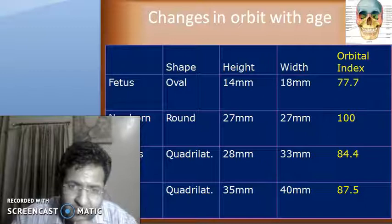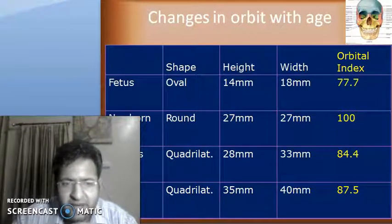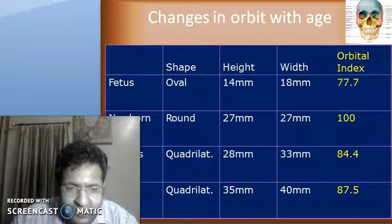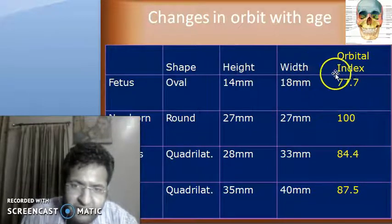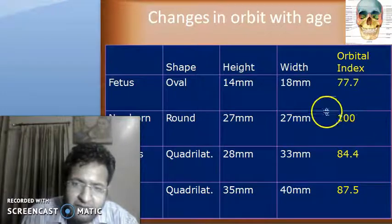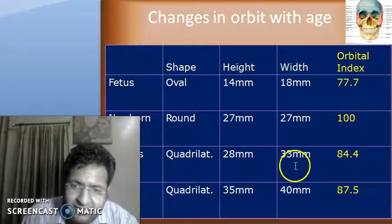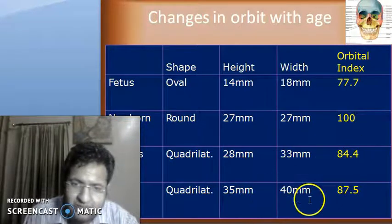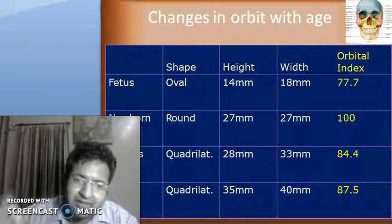The changes in the orbit seen with age: according to shape, it is oval in the fetal life, round in the newborn, then achieves a cordial shape at seven years. The height and width both increase but at a different pace. The orbital index is height divided by width into 100. It achieves an orbital index of 100% at newborn age, but then the width grows more than the height, and later the height increases more than the width. So the growth rate is different for height and width, resulting in non-symmetrical growth and shape changes.